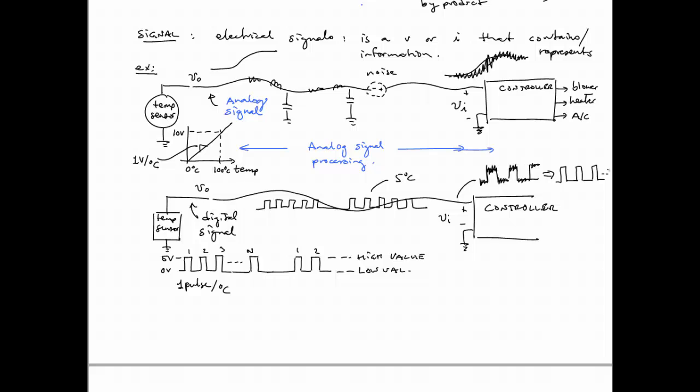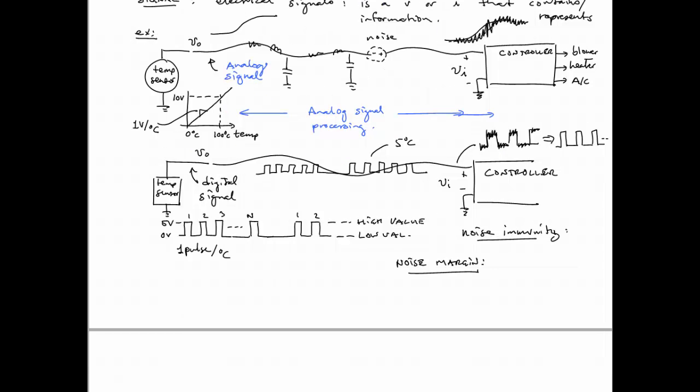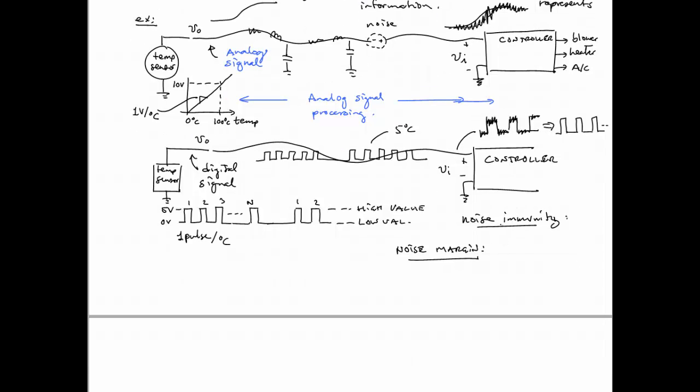And so there is noise immunity. Noise immunity. Now how much noise is there? How much immunity do we have? Well, we define that using the idea of noise margin. So with noise margin, we would define if we had our output goes between 0 and 5 volts. So this is 5 and this is 0.